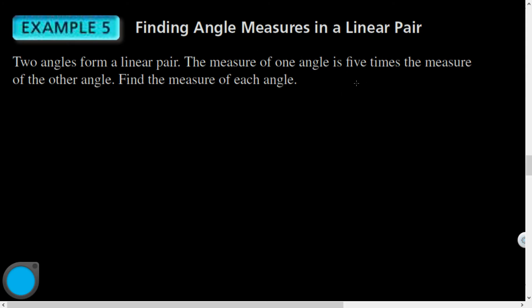The measure of one angle is five times the measure of the other angle. Oh my goodness. So I've got two angles that form a linear pair, and then one angle is tiny, and the other angle is mondo. All right. So that's kind of what we would have visualized. There's many variations of it, I suppose, but that's what we go. And then it says, find the measure of each angle.